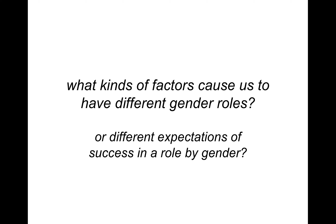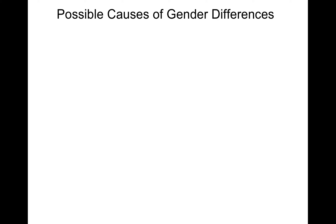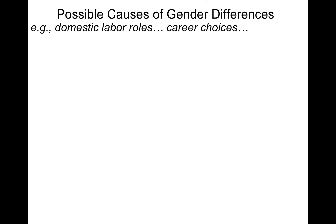So what kinds of factors cause us to have gender roles? We can discuss what causes us to have different expectations of success in a role by gender. We might talk about biological factors, structural factors that give us resources, or cultural factors that shape the meaning of things. Even if I've got resources and could be successful in a role - I've got the money, I've got the skill - I may not want to, or people might not let me, because they have different understandings of what's appropriate. This can be domestic labor roles or career choices - whether you think it's okay to be a nurse or a firefighter based on your gender.